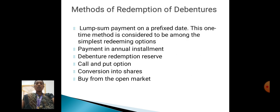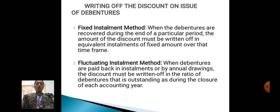Methods of Redemption of debentures: Lump-Sum Payment — this method is a one-time method and is considered to be among the simplest redeeming options. Other methods include payment in annual installments, debenture redemption reserve, call and put options, conversion into shares, and buy from the open market.